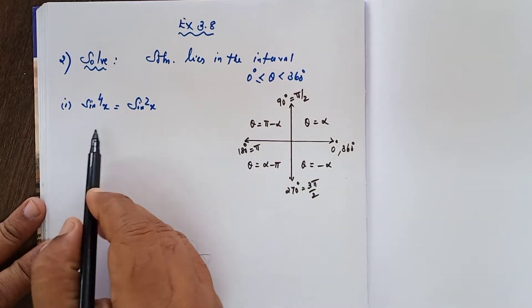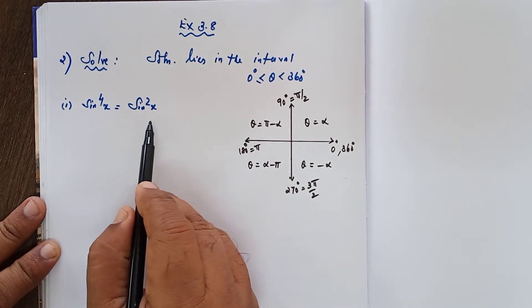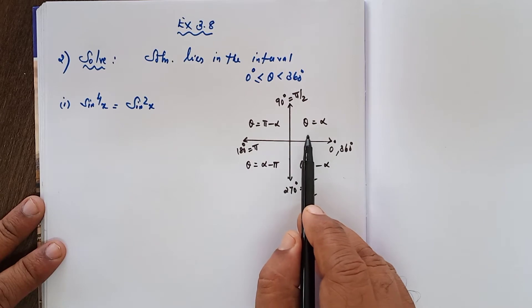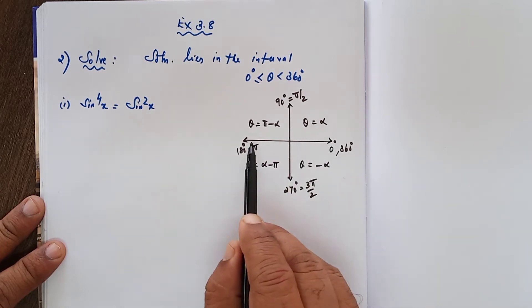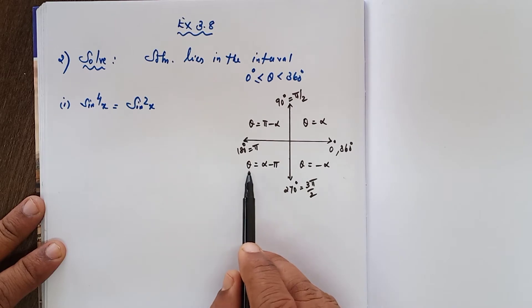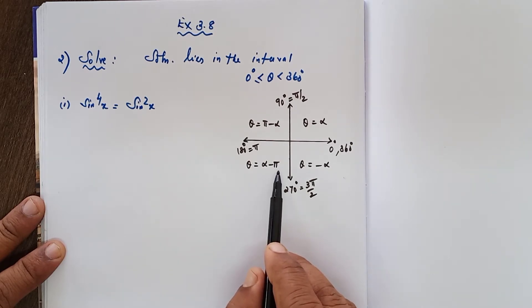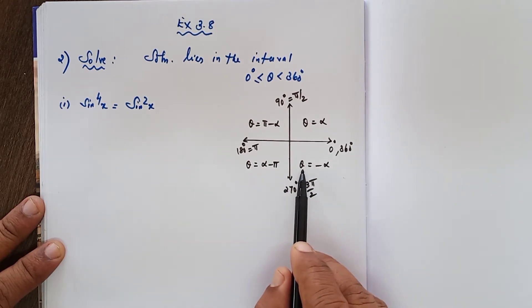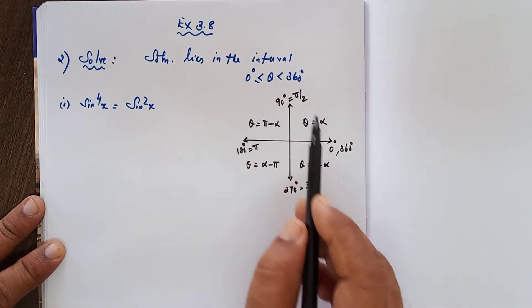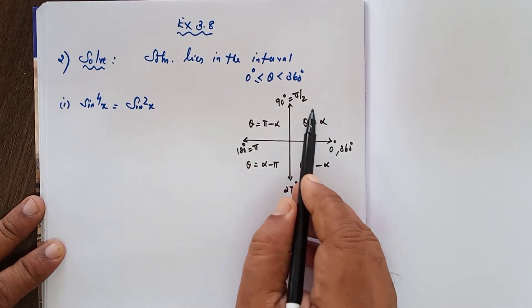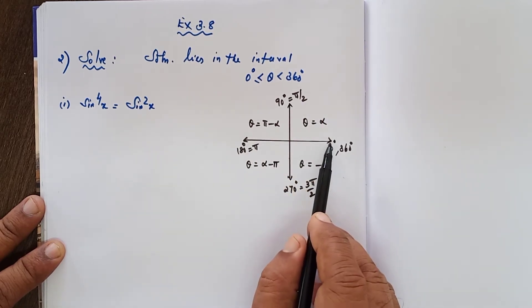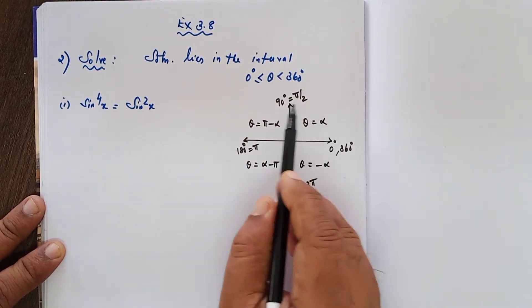Subdivision number 1: sin⁴x equals sin²x. You must know that in the first quadrant the solution theta equals alpha, in the second quadrant theta equals 180 minus alpha, in the third quadrant theta equals alpha minus 180, and in the fourth quadrant theta equals minus alpha. For 0 to 360, anticlockwise direction — full of positive angles.